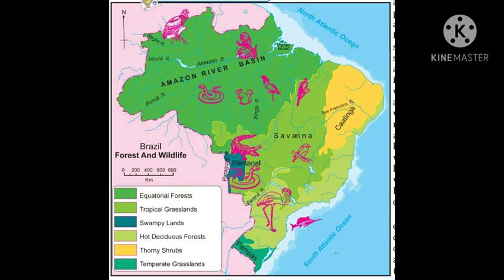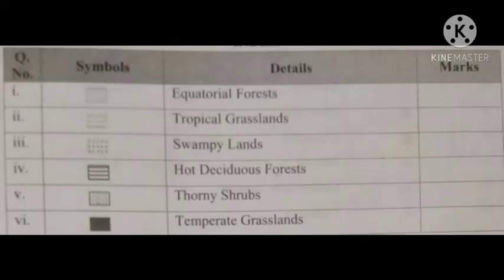Temperate grassland is set to the south using a dark green color. Different symbols are used — we have to decide which symbol we are using. We have two maps: one is the textbook and the other shows the symbols. The important thing is the index — make sure your index is clearly shown on the map.